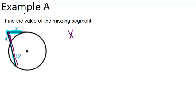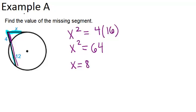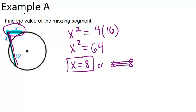So in other words, X squared will equal 4, the outside part, times the whole thing, which is 16, 4 plus 12. So X squared equals 64, which means that X equals 8 or X equals negative 8. Now in the context of this problem, negative 8 doesn't make sense because X is a length and you can't have a negative length. So we're going to cross out that answer and say X equals 8 is our only answer.